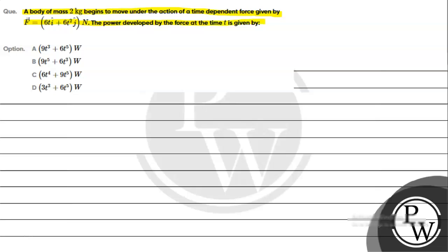The power developed by the force at time t is given by: option A, 9t³ + 6t⁵ watt; option B, 9t⁵ + 6t³ watt; option C, 6t⁴ + 9t⁵ watt; option D, 3t³ + 6t⁵ watt.